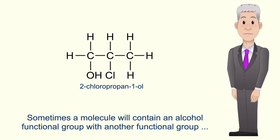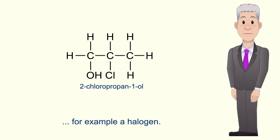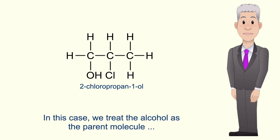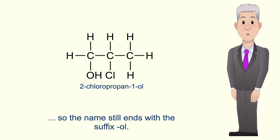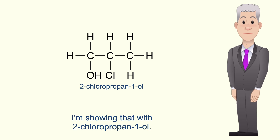Sometimes a molecule will contain an alcohol functional group with another functional group, for example a halogen. In this case we treat the alcohol as the parent molecule, so the name still ends with the suffix '-ol'. I'm showing that with 2-chloropropan-1-ol.